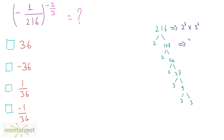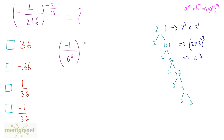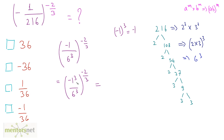This is equivalent to 2 times 3, all raised to the power 3, using the law of indices: a raised to m times b raised to m equals ab raised to m. So 216 equals 6 cubed. We can then write the expression as minus 1 upon 6 cubed. Writing minus 1 as minus 1 cubed, this becomes minus 1 by 6, all cubed, raised to minus 2 by 3.